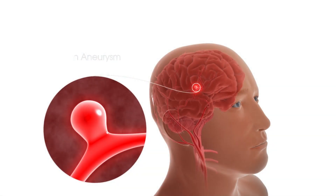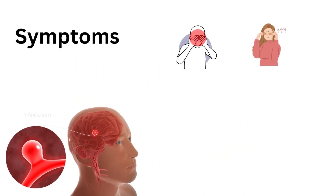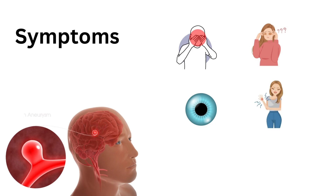Brain aneurysms often have no symptoms. However, some brain aneurysms can cause symptoms by pressing on nearby nerves and tissues. Some of the symptoms you might get with a brain aneurysm include pain around the eye, vision changes, dilated pupils, numbness or weakness, speech difficulties, and memory loss. A leaky aneurysm that hasn't yet burst may also cause a warning headache.